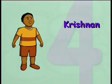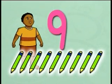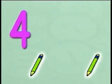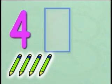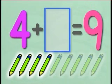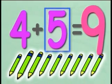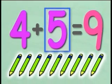Krishnan has four pencils. How many more pencils must he buy to make nine pencils? Let's write this as a number sentence. Krishnan has four pencils. What number added to four will give him nine? Yes, Krishnan must buy five pencils to make nine pencils.